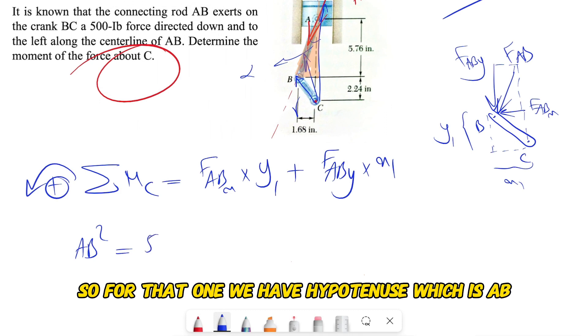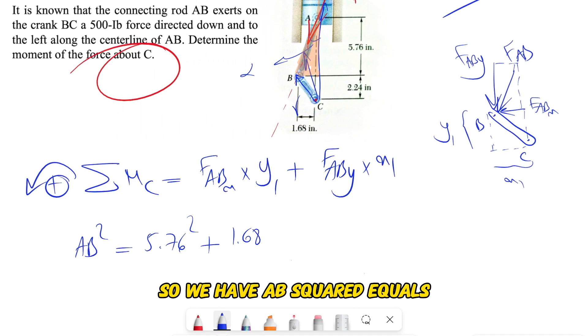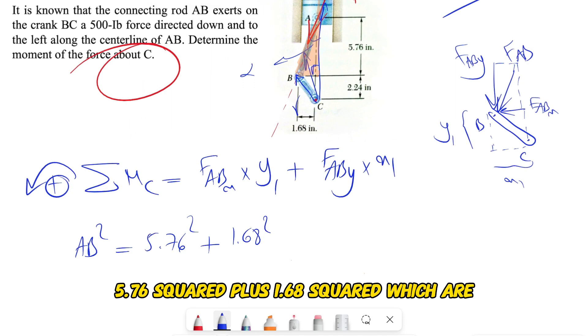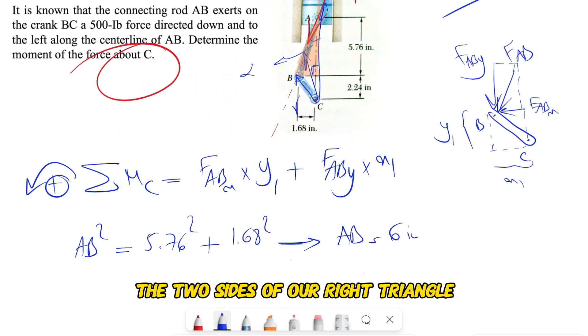So for that one we have the hypotenuse, which is AB. So we have AB squared equals 5.76 squared plus 1.68 squared, which are the two sides of our right triangle.